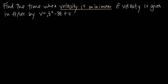Our next step is always to check: is our function in terms of one variable only? In this case, velocity is already in terms of only the variable t, no other variables. So once we have the function we need and it's in terms of one variable only, our next step is to take the derivative. The derivative of v, we'll call v prime, and when we take the derivative of the right-hand side with respect to t, we get 2t minus 8.